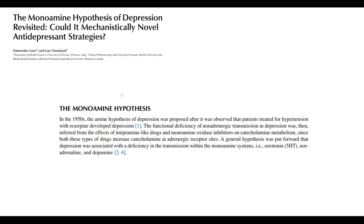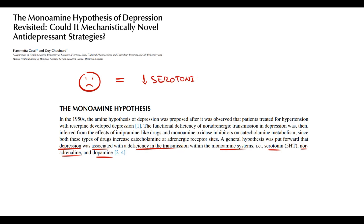Up to this day we treat depression according to monoamine theory. We believe that depression is caused by deficiency of neurotransmission, which can be caused by low levels of serotonin and norepinephrine, and to a lesser extent dopamine, in the synapse. So we believe that depression is caused by decreasing amounts of serotonin and norepinephrine in the synapse. The most obvious approach is to increase the amount of serotonin and norepinephrine in the synapse.